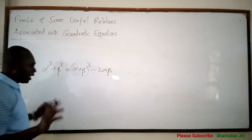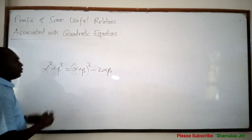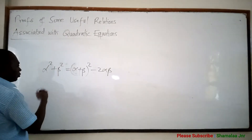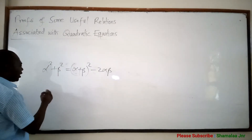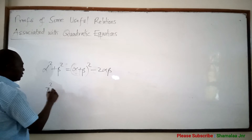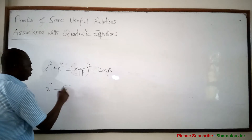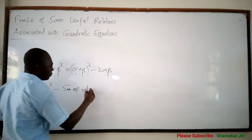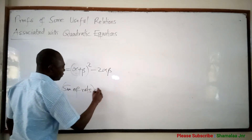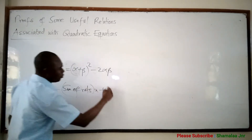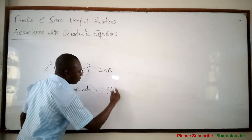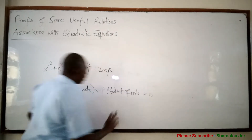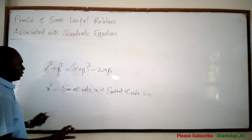Because in that video, I told you that if the roots of any quadratic equation are known, to get the quadratic equation you just use x squared minus the sum of roots times x plus the product of roots, and you are going to get zero.